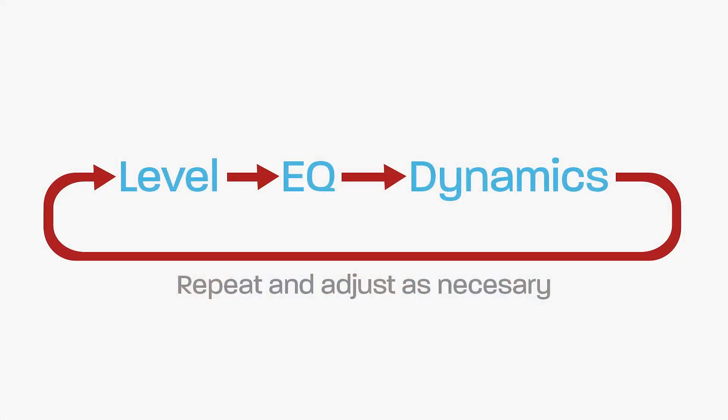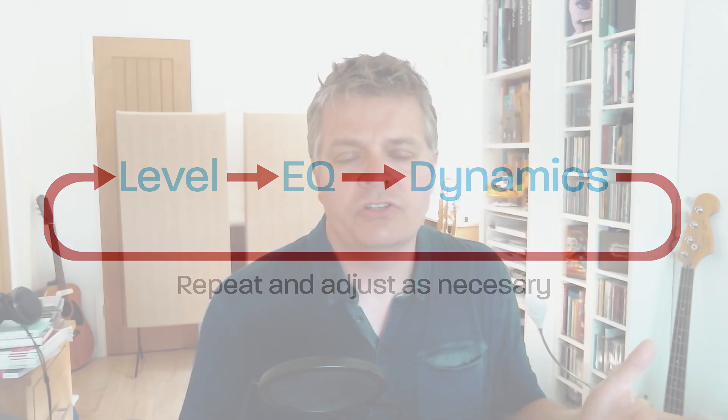I've laid out a process in these videos of setting the level, setting the EQ, and setting the compression and dynamics. Of course, you could use the EQ after the dynamics processing — that's absolutely valid, it has a slightly different effect. But this comes back to my goal for invisibility. If you have a compressor working very hard and then apply EQ afterwards, it can make the compression even more obvious. Take, for example, a kick drum pushing into a compressor.